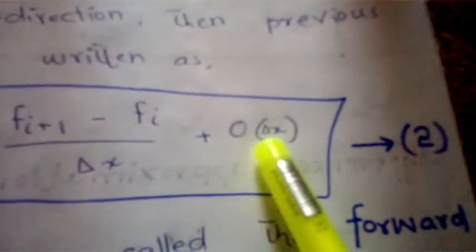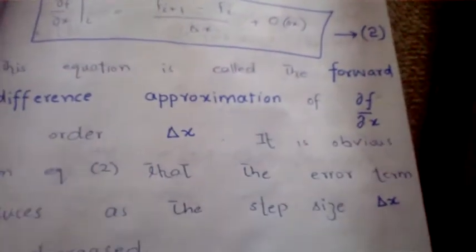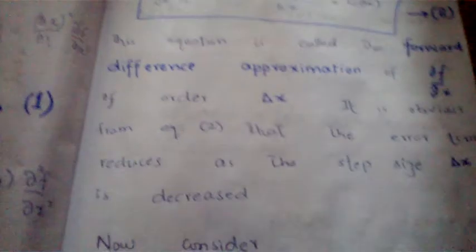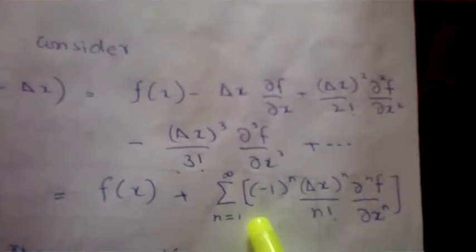This was our first formula — the forward difference of the first derivative of order O(Δx). We now proceed to find the Backward Difference Approximation. We again consider the Taylor series, this time for f(x − Δx), which expands with alternating signs: minus, plus, minus, plus, and so on. The equivalent summation form is left as an exercise for the viewer.